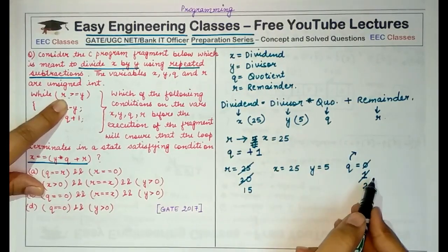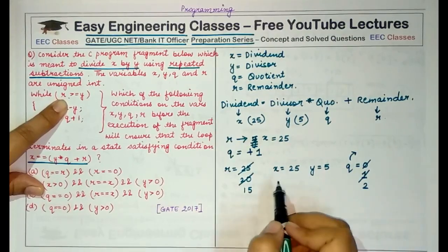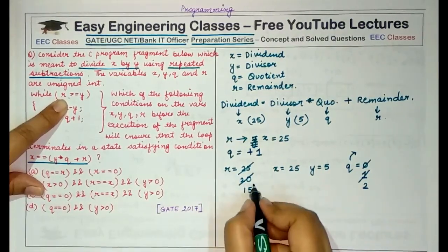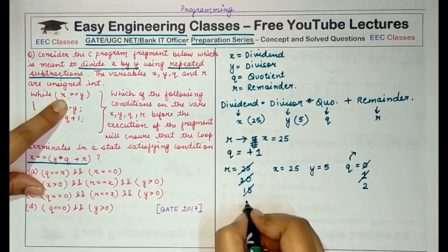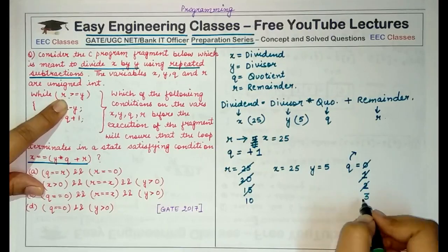So Q is basically counting the number of times I am decrementing R. Again 15 is greater than 5, so I move to 10 and here the count or the quotient becomes 3.